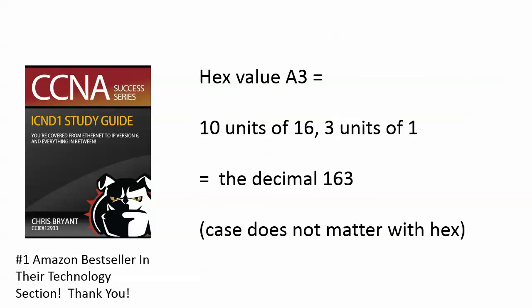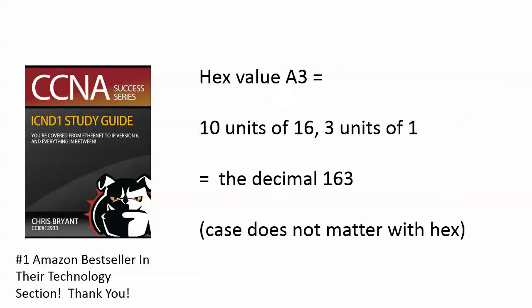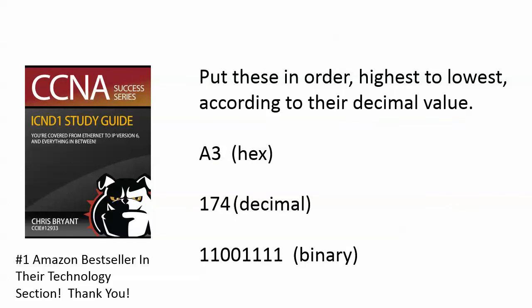So that gives us our value in decimal for that hex character 163, and we know 174 decimal is obviously higher. What does that binary string equal? Well, the binary string 11001111 has the following bits set to 1: 128, 64, 8, 4, 2, and 1, because the two that are set to 0 there are the 32 and 16. You add those up, and you have 207, and you've got your answer, because the highest value would be the binary, because the binary string converts to 207, then the decimal at 174, and then the hex value comes in at 163. In about three minutes, that's all there is to it.